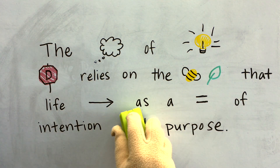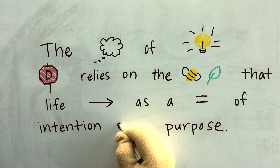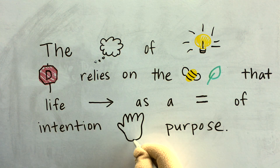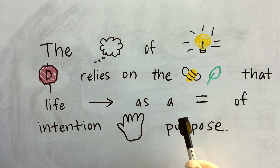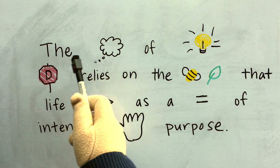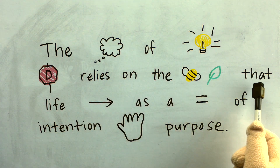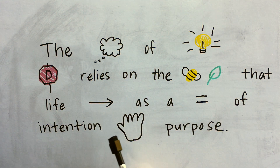And let's now erase the word and and draw a picture of a hand, because and and hand kind of sound the same. I especially like using a hand for the word and because it shows that things were made on purpose. The theory of intelligent design relies on the belief that life began as a result of intention and purpose.